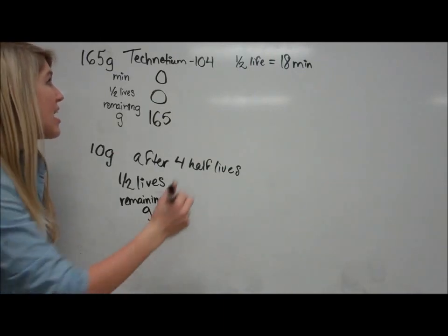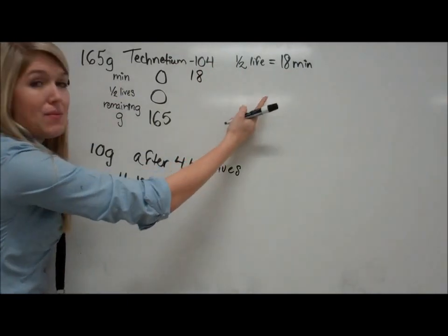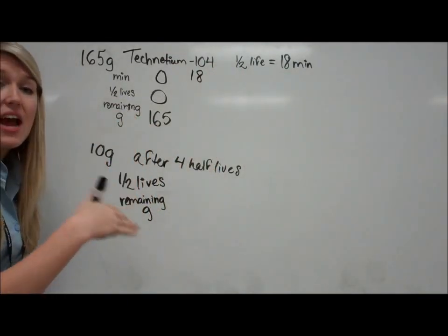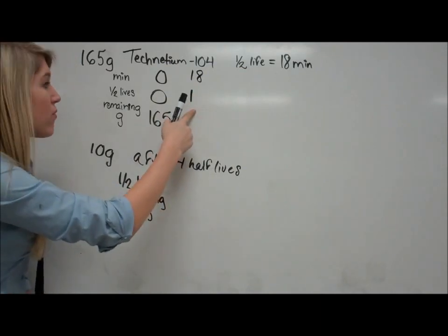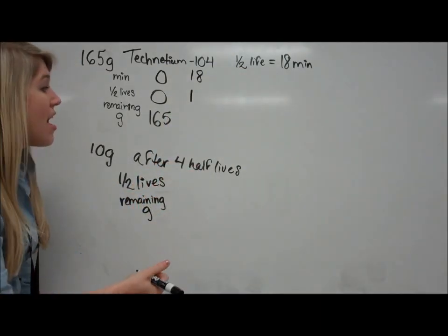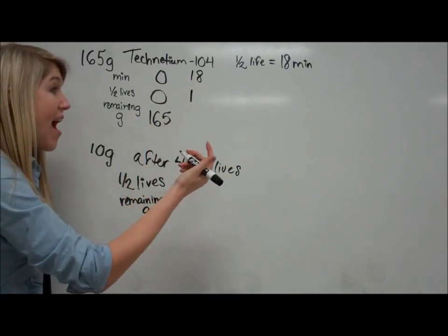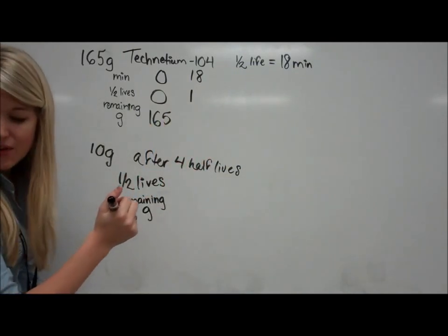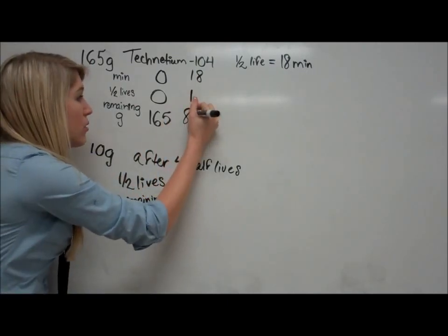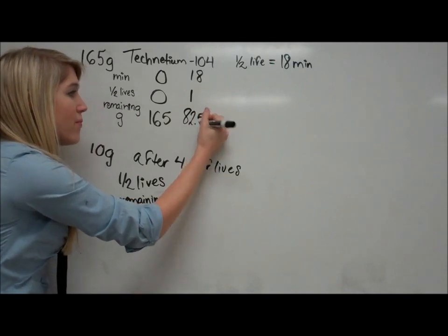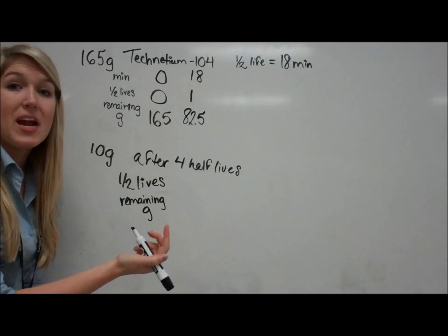So then let's say 18 minutes goes by. We know 18 minutes is the time it's going to take to have one half-life occur. So there's been one half-life, it's been 18 minutes, and all we're going to do to figure out how much is remaining is cut that number before in half. So half of 165 is 82.5. So after one half-life, 18 minutes, there's 82.5 grams remaining.